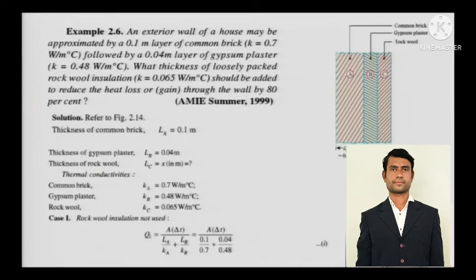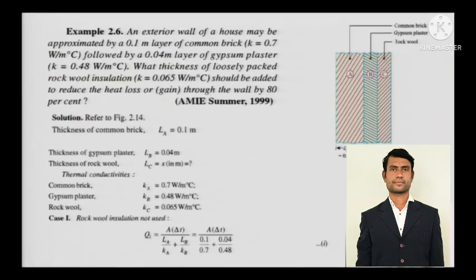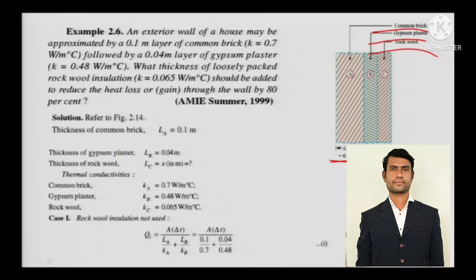Now we move to three layers of a composite wall. An exterior wall of a house may be approximated by a 0.1 meter layer of common brick (K equals 0.7 watts per meter degree Celsius) followed by a 0.04 meter layer of gypsum plaster. What thickness of loosely packed rock wool insulation should be added to reduce the heat loss or gain through the wall by 80%? The K value for rock wool is already given.